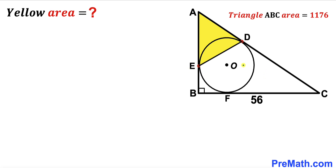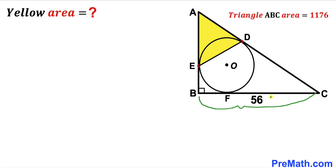Welcome to PreMath. In this video we have a circle with center O fully inscribed in a right triangle ABC, such that the area of triangle ABC is 1176 square units and its side length BC is 56 units. Points D, E, and F are the points of tangency, and our task is to calculate the area of the yellow shaded triangle ADE.